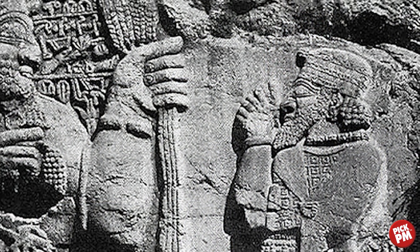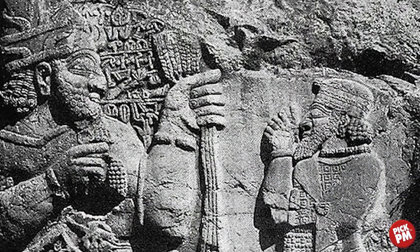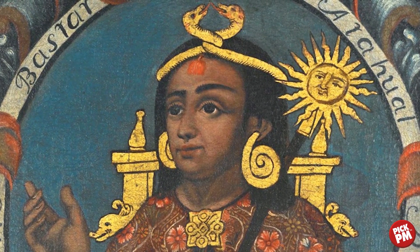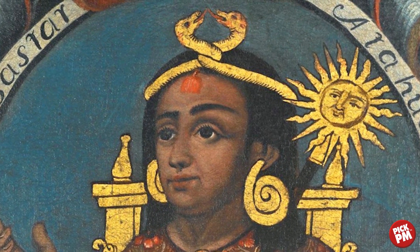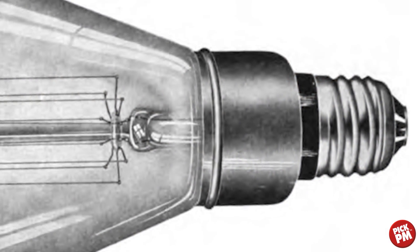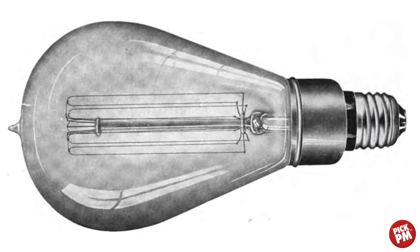Looking at the history of powder metallurgy: in 3000 BC the Hittites were using sintered iron. In 400 AD the India Delhi iron column was manufactured. In the 1400s the Incas produced gold and platinum jewelry using powder metallurgy processes. In 1805 the English used sintered platinum.